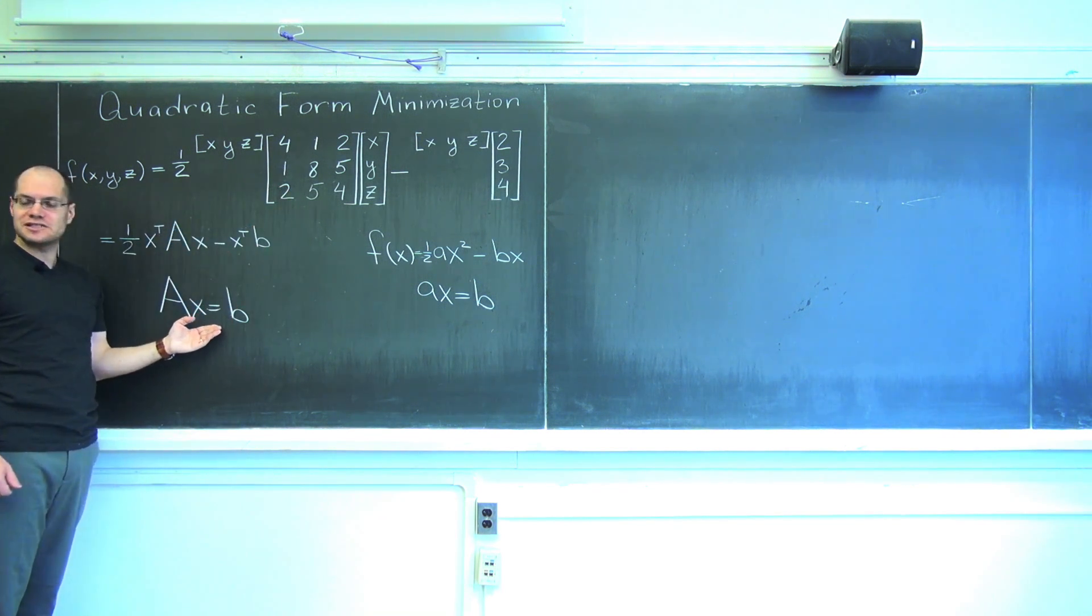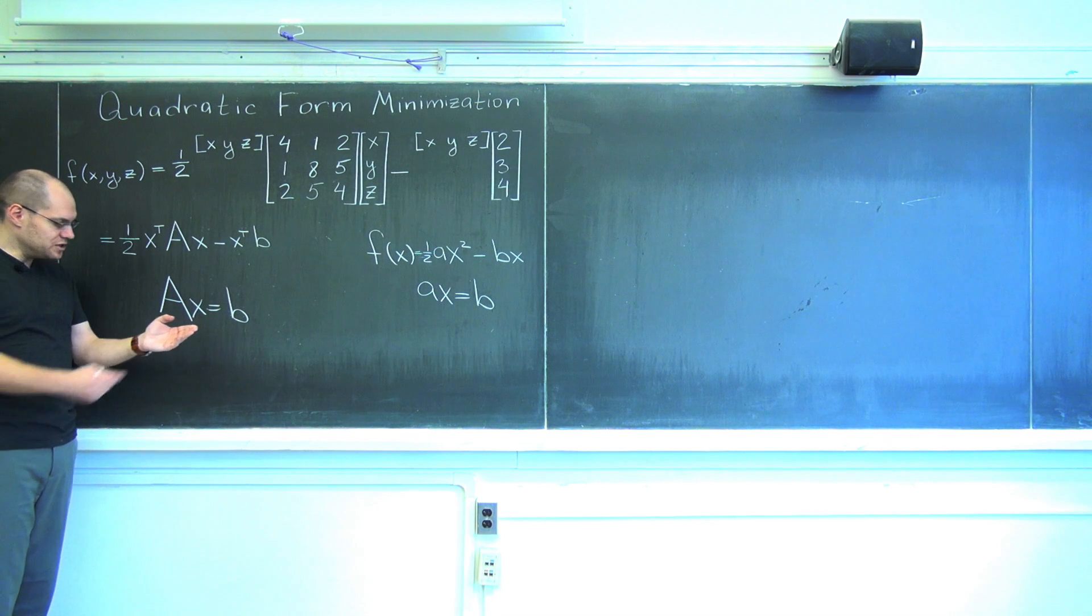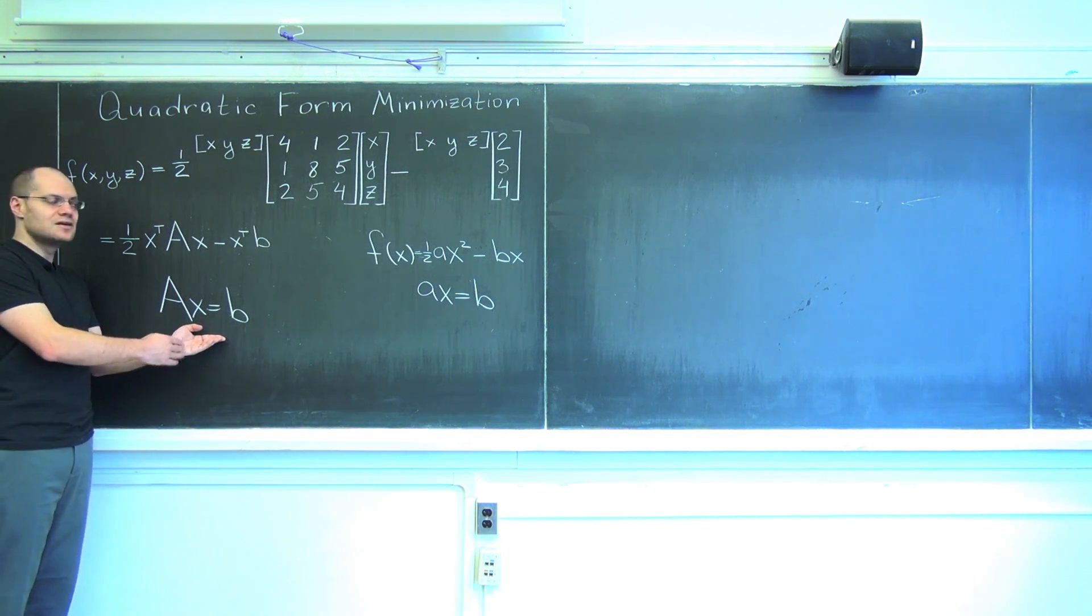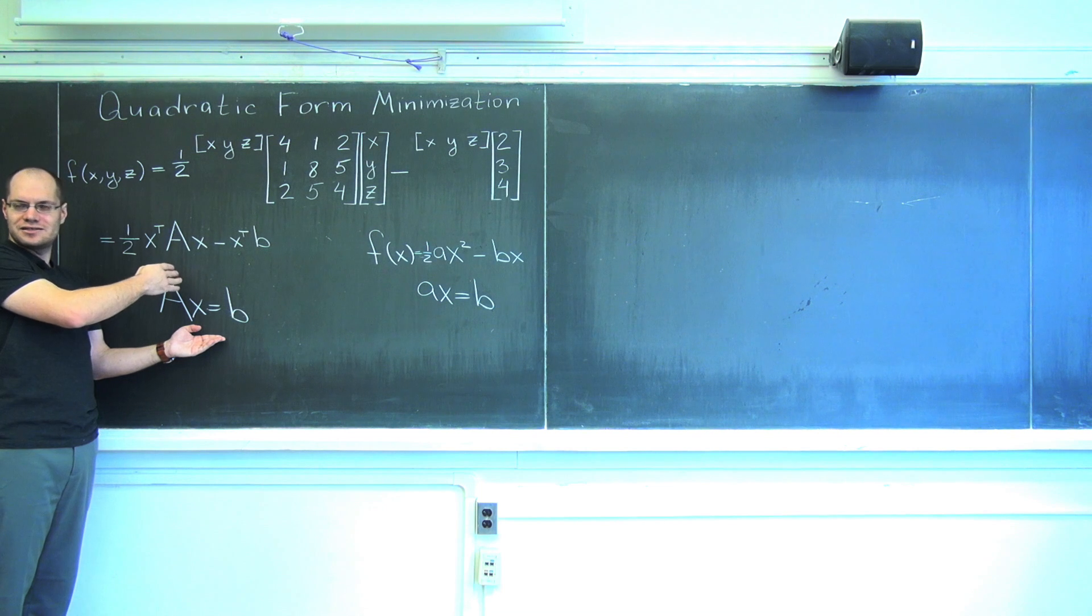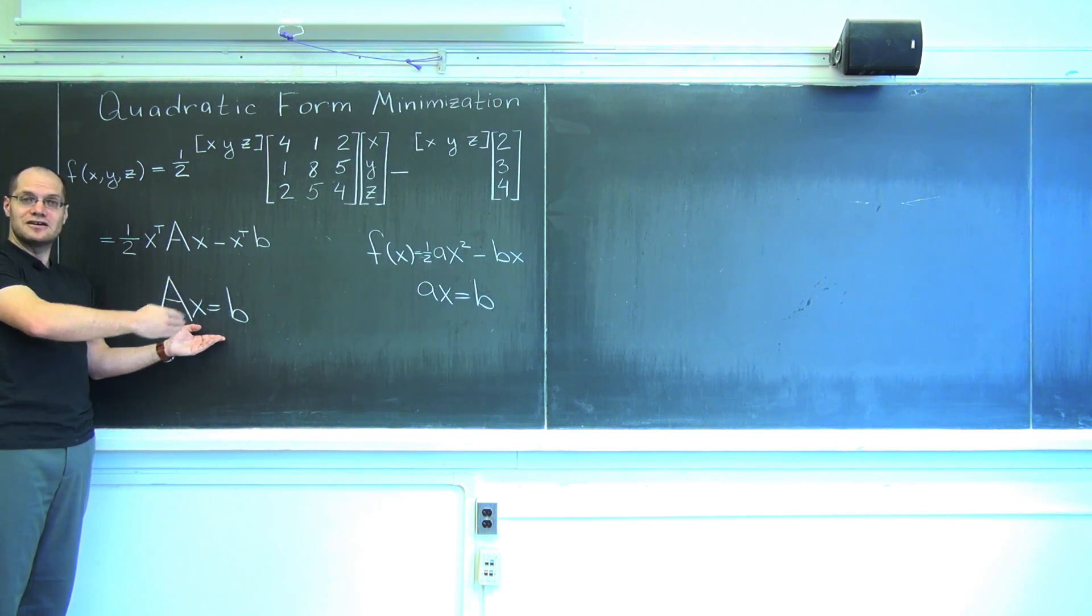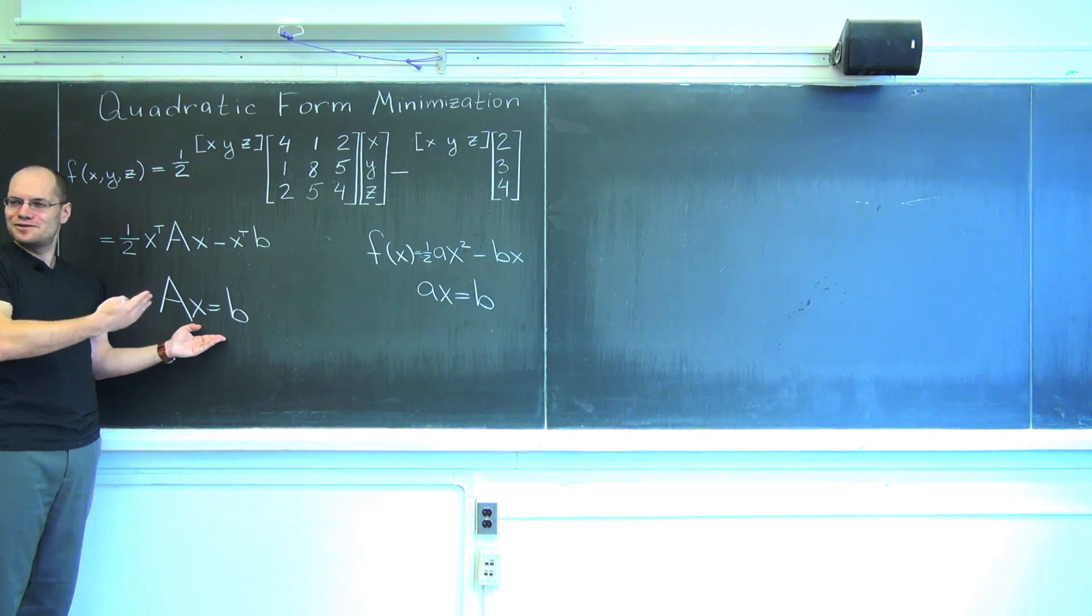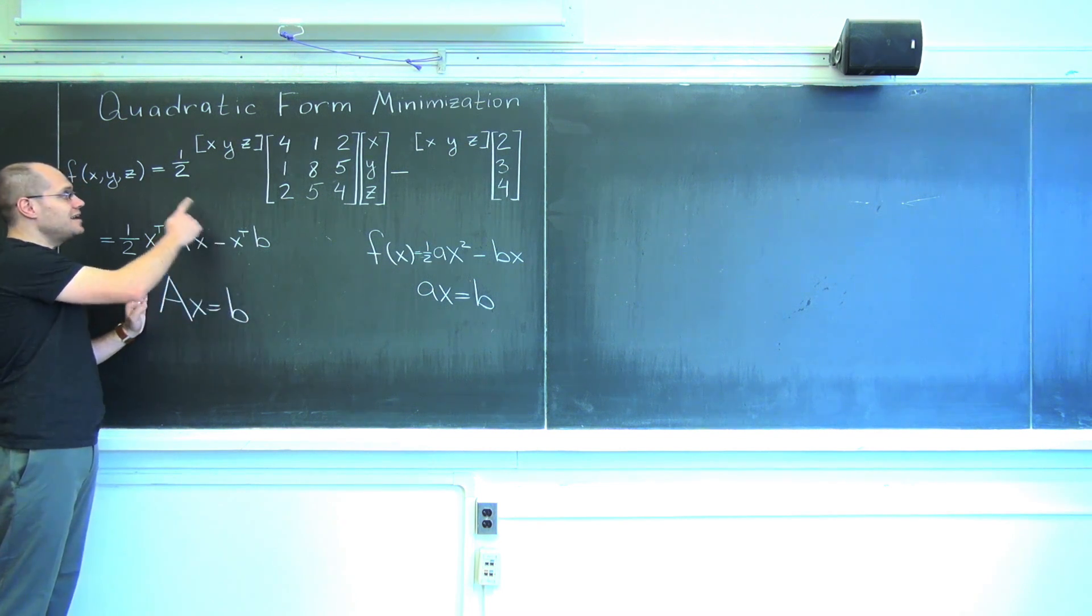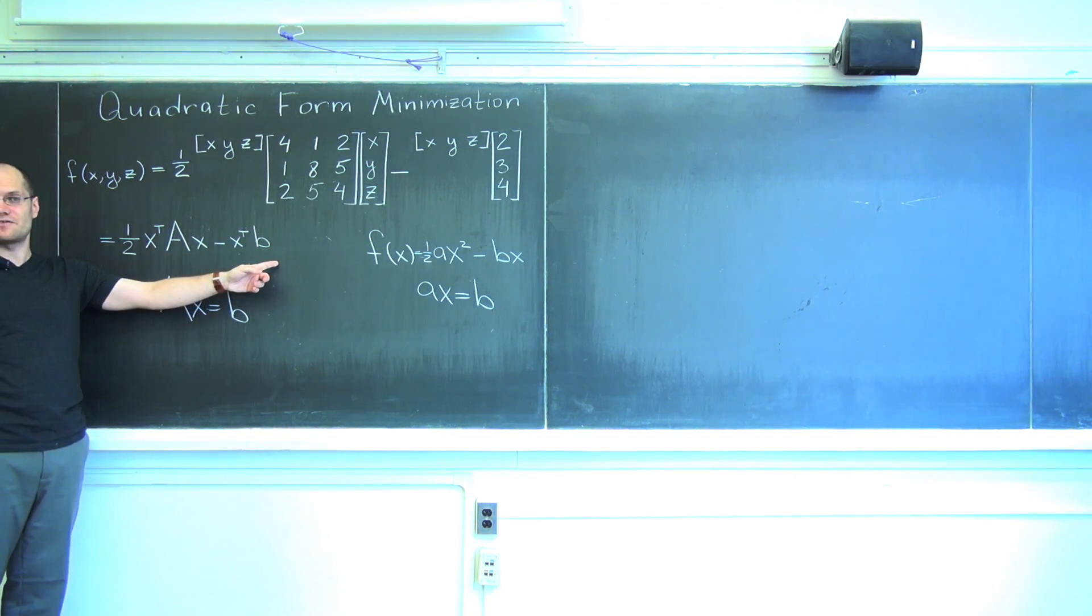Quadratic form minimization, quadratic form with a shift, basically comes down to solving a x equals b. This is a much greater takeaway. We just learned that the fundamental problem of linear algebra, or at least its first pillar, comes from a minimization problem. To solve a x equals b is to minimize this function, this quadratic form with the linear shift.